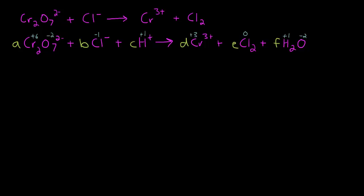Alright, so we have enough information to write our equations now, so we'll start with chromium. We have two chromiums in the A molecule and one chromium in the D molecule. Next we have oxygen. We have seven oxygen in the A molecule and one oxygen in the F molecule. We have chlorine next, we have one chlorine in the B molecule and two in the E molecule. And we have hydrogen. We have one hydrogen in the C molecule and two hydrogens in the F.